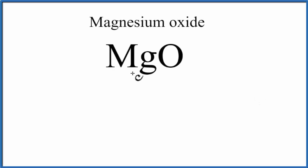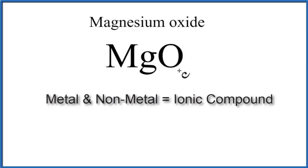In this video, we'll write the Lewis structure for MgO, that's magnesium oxide. Magnesium is a metal, and then oxygen, that's a non-metal. When we have a metal and a non-metal bonded together, we have an ionic compound.